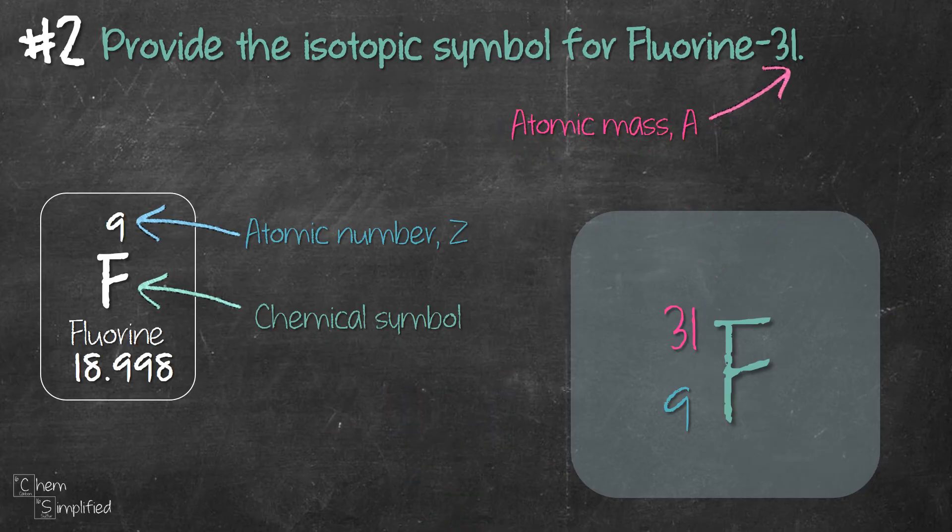If we're writing the isotopic symbol for fluorine-31, it will be this. We simply change out the atomic mass. The chemical symbol and the atomic number stays the same.